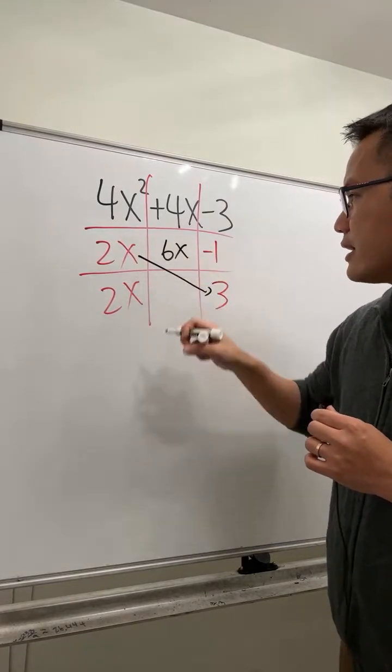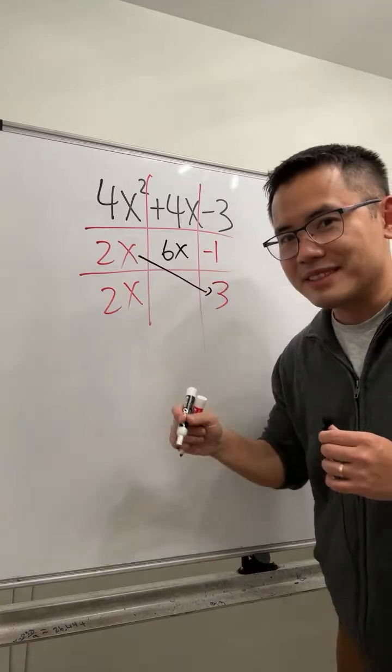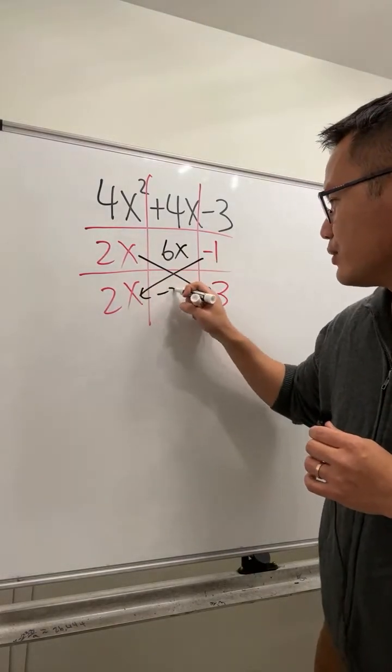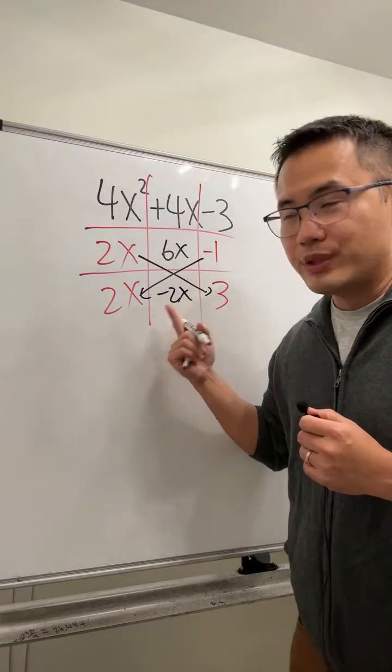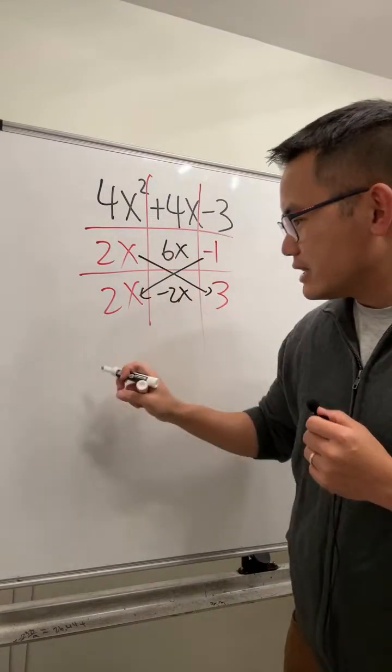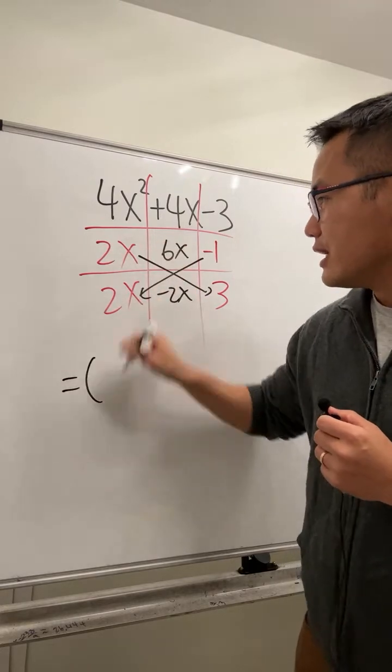times that gives you negative 6x, you get positive 6x, and this times that gives you negative 2x, which actually works because 6x minus 2x gives us 4x. So the answer is really just this and that.